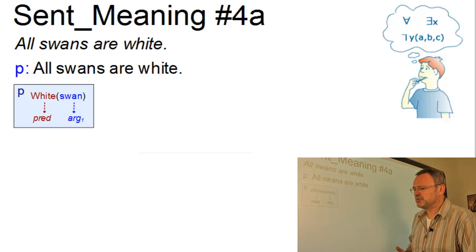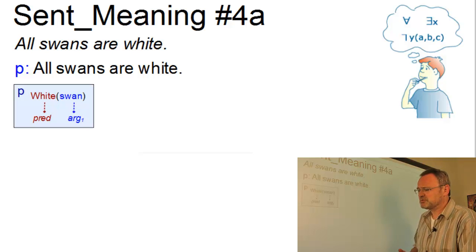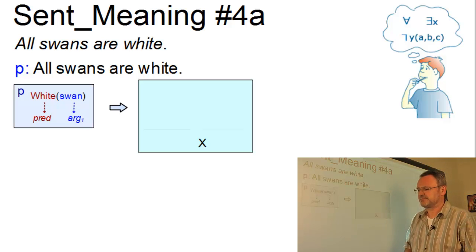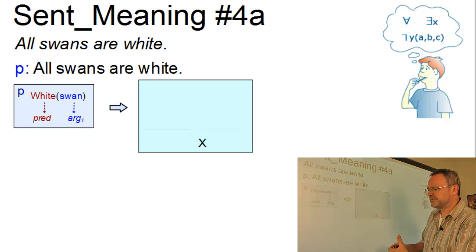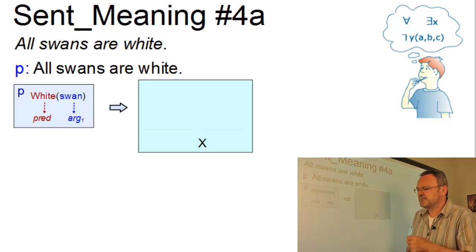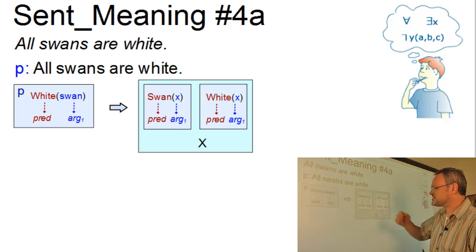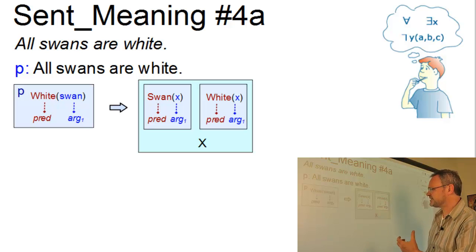Well, in order to make statements about amounts or sets, we need a variable. A variable such as x. And this variable can be assigned properties by means of two simple predications. The first one is x is a swan, predicate swan, variable x. And the second one is x is white, predicate white, and variable x.